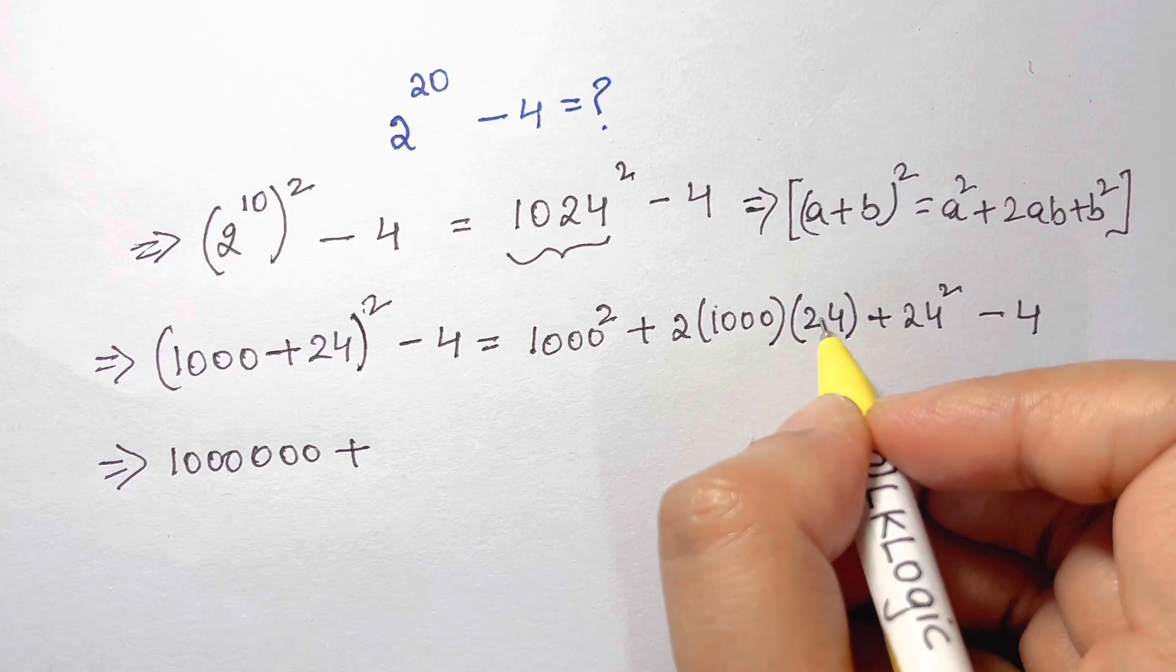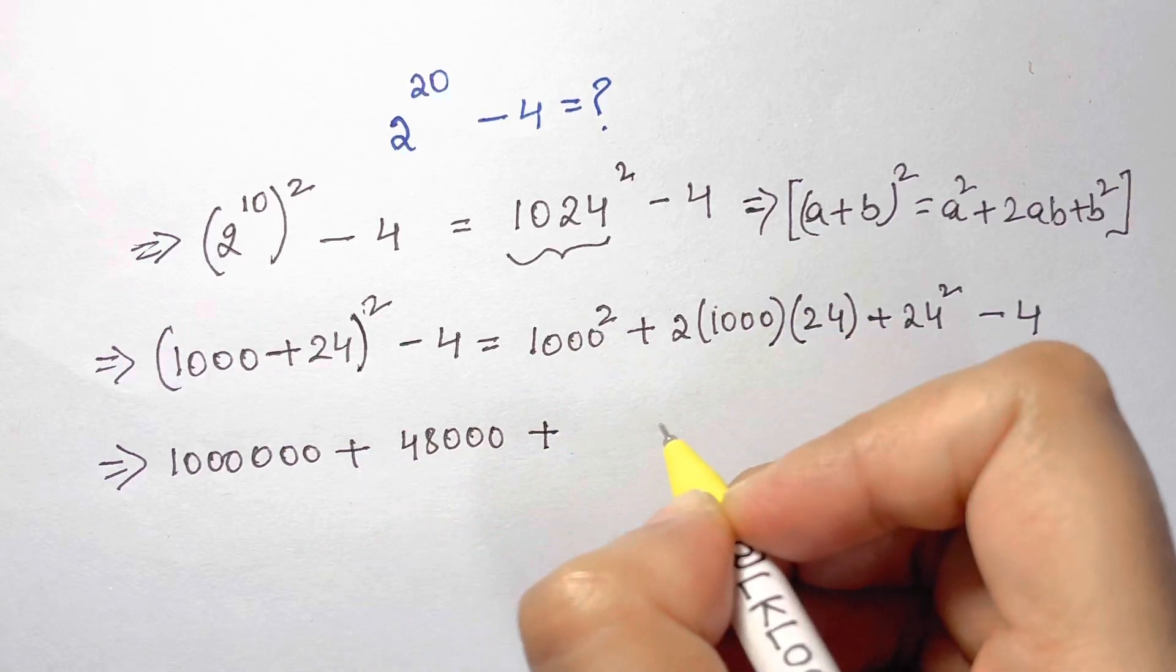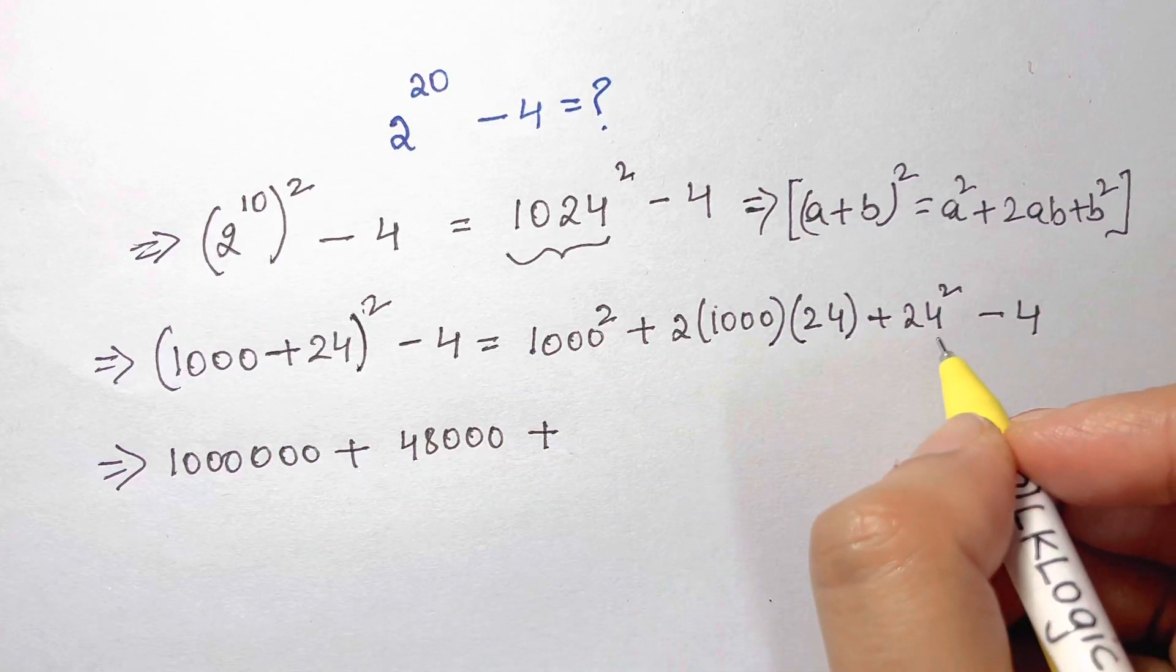Plus 24 squared. Now I'm going to show you an easiest trick to find the square of a number.